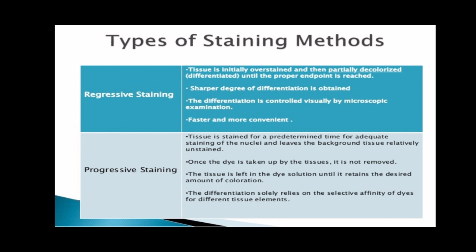Progressive staining is somewhat less favored than regressive staining due to the difficulty of producing sufficiently intense progressive staining of cell structures without staining other parts, thereby resulting in diffused color and obscure details. In simplified terms, progressive staining means to continually stain the tissue section until the desired intensity of coloration is reached.